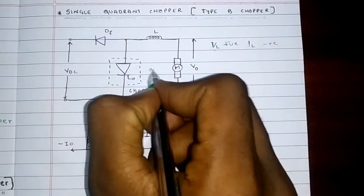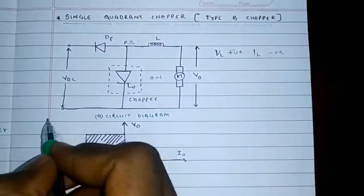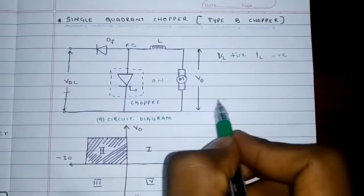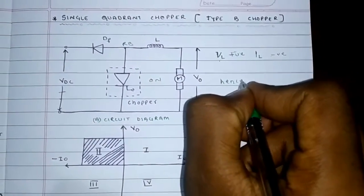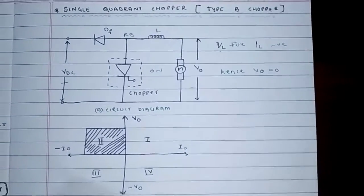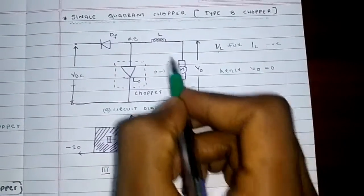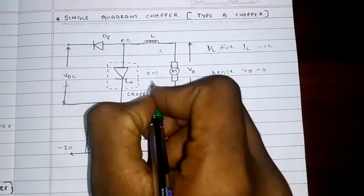When the chopper is on, the diode is reverse biased and disconnects the source and load. Hence, the output voltage is zero and the back EMF of this motor is stored in the inductor.